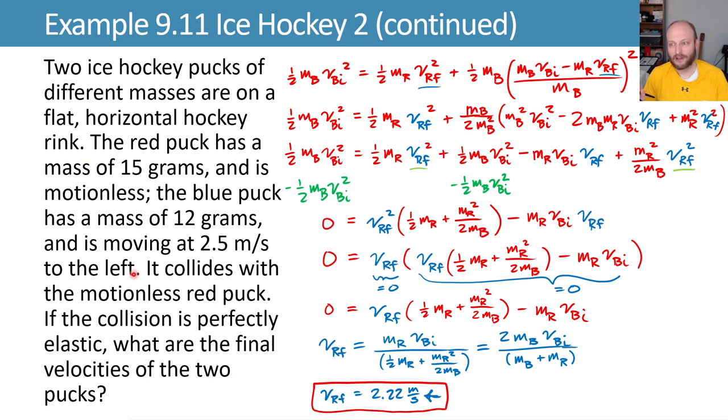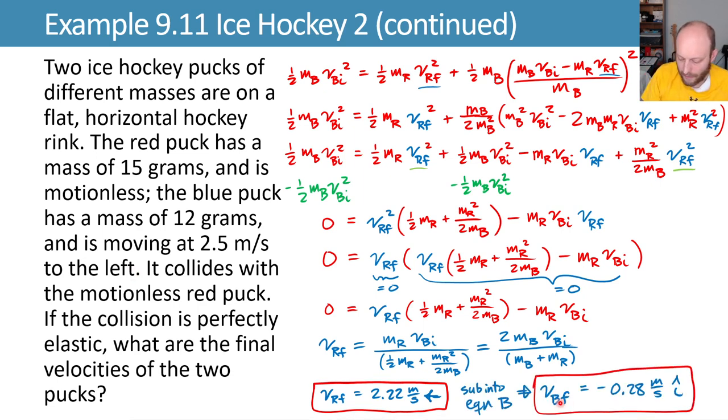And then we substitute it also back into that equation B from the previous slide, and we end up with vbf as a negative. So that means it actually bounces back in the direction it came from. This makes some sense since the blue puck is less weighty than the red puck. It bounces into the red puck and the red puck moves while the blue puck bounces back a little bit. And so it ends up with a negative velocity.